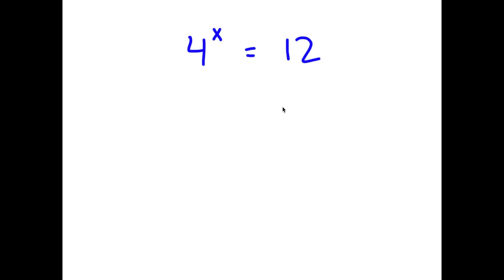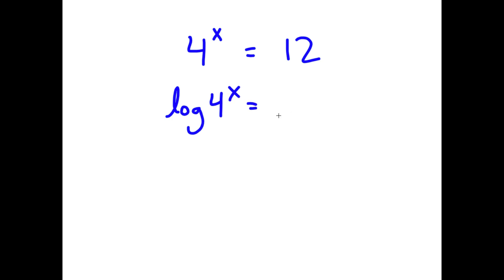In this problem, I have 4 to the power of x is equal to 12. So to solve this, I'm going to first take the log on both sides. So I have log 4 to the power of x is equal to log 12.